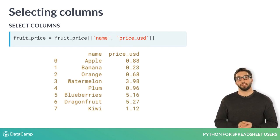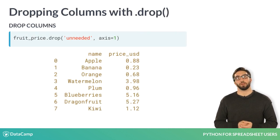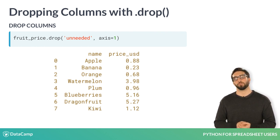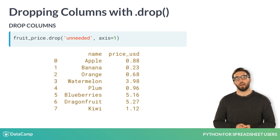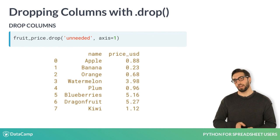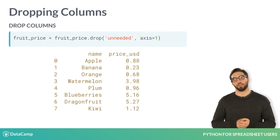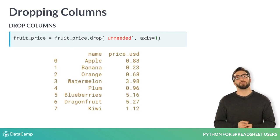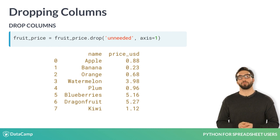Alternatively, a data frame's .drop method can be used to delete columns by passing a column name, or a list of column names, along with the argument axis equals 1. The axis argument tells Python to delete columns — I like to remember this with the idea that columns, like 1s, go up and down vertically. Again, we assign our leaner data frame back to the fruit_prices data frame.